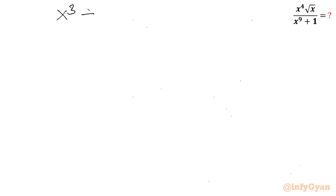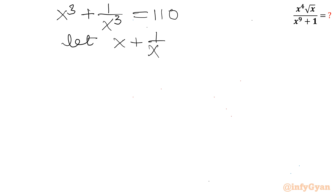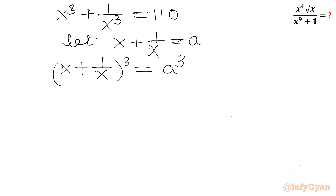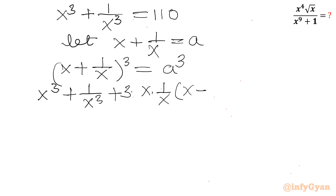Let us consider x³ plus 1 over x³ equal to 110. Now let us assume x plus 1 over x equals a. I will cube both sides, so I write (x plus 1 over x)³ equals a³. Now I will apply the (a + b)³ formula: a³ plus 1 over x³ plus 3 times x times 1 over x, in bracket x plus 1 over x, equals a³.